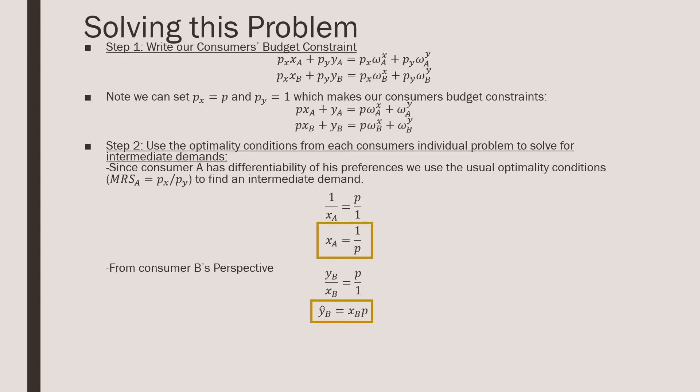So step number one for solving this problem is that we're going to write our consumers budget constraints as follows. We note that we can set the price of good Y equal to one or really just any one of our goods to one. In this case, we're going to use good Y and for the price of good X, that's going to be equal to P.